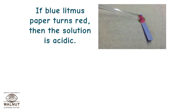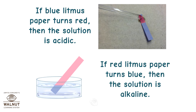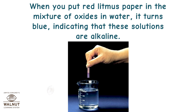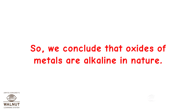If blue litmus paper turns red, then the solution is acidic. If red litmus paper turns blue, then the solution is alkaline. When you put red litmus paper in the mixture of metal oxides in water, it turns blue, indicating that these solutions are alkaline. So we conclude that oxides of metals are alkaline in nature.